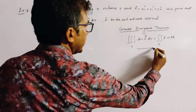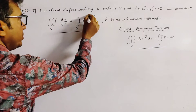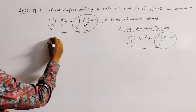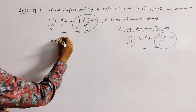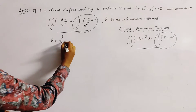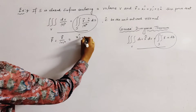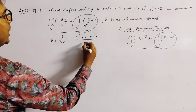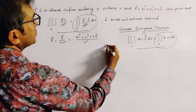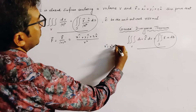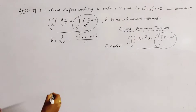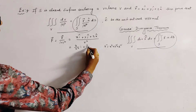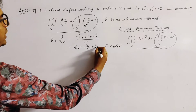Comparing the right-hand sides, we identify that F = r/|r|², which equals (xi + yj + zk)/r². Here r² means x² + y² + z². This can be written as (x/r²)i + (y/r²)j + (z/r²)k.